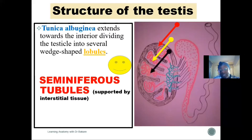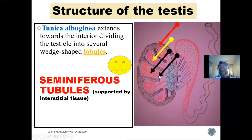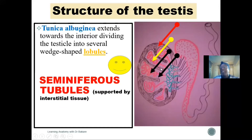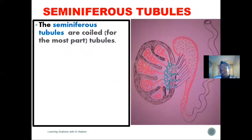Within each lobule, aside from the seminiferous tubules, we also see the interstitial tissue — the region dotted blue. We have the seminiferous tubules, which are a tubular network, embedded in a mesh of interstitial tissue.